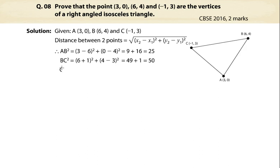Let's find CA square. Let's put the values in the formula and simplify. Therefore, CA² = 25.